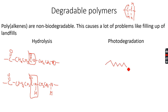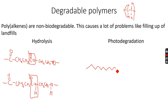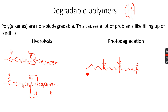Now, photo degradation. This occurs when a polymer chain has carbonyl (C=O) groups at regular intervals inside the chain. These carbonyl groups absorb ultraviolet light, and as they absorb it, the bond breaks down. You can see the molecule breaking at each carbonyl position, causing the polymer to break down into many pieces — this process is known as photo degradation.